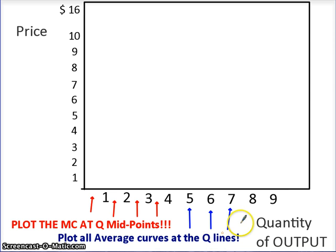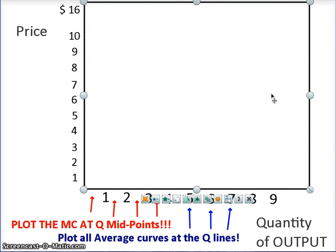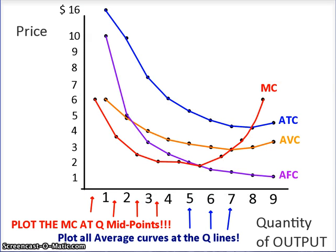The average curves are plotted at the quantity lines; the marginal cost is plotted at the midpoints. If you do this properly, that's what it's going to look like.